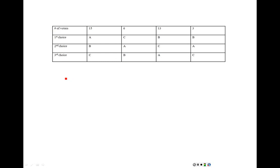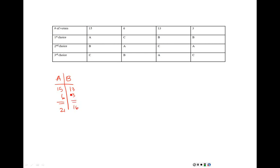Here we're looking at candidates A, B, and C. Let's start with A versus B. Comparing A and B: 15 votes go to A because A is ranked first in that column. Then 6 more votes go to A because A is ranked above B. In the next column, B is in first place with A in last, so those 13 votes go to B. And in the last column, 3 votes go to B. A has 21 votes, B has 16 votes — so B lost, meaning B is not the Condorcet candidate.